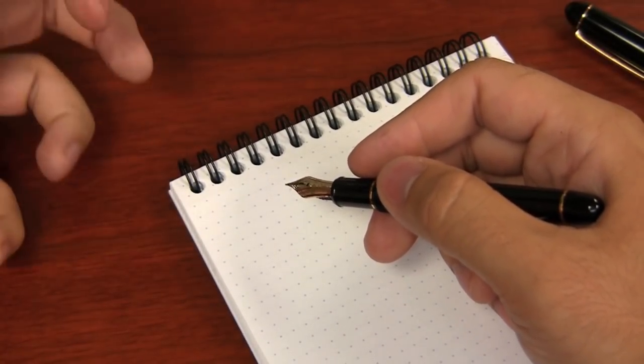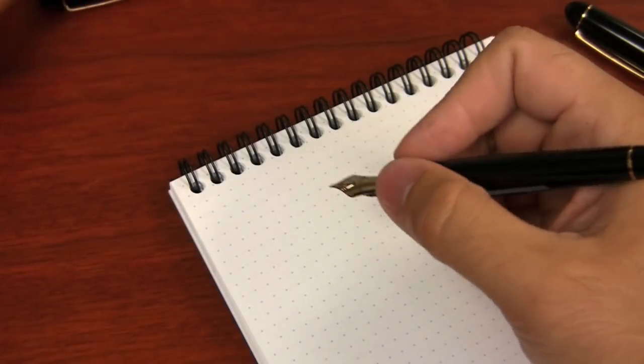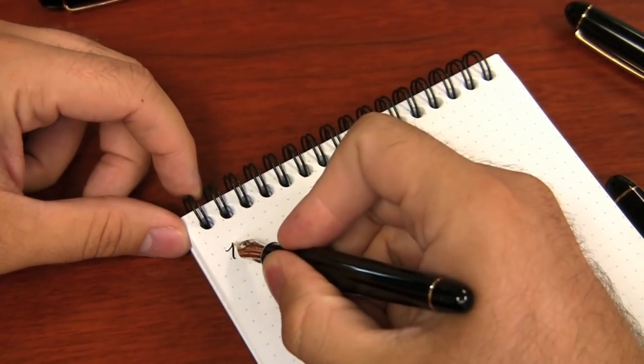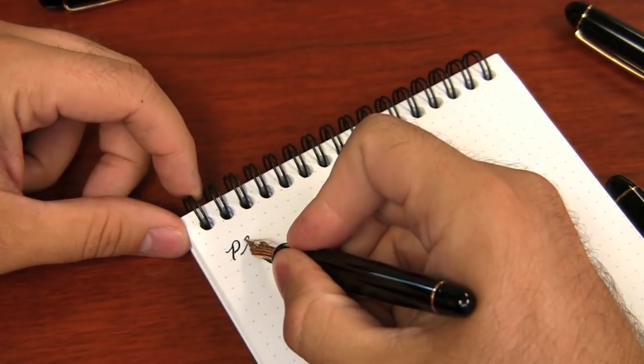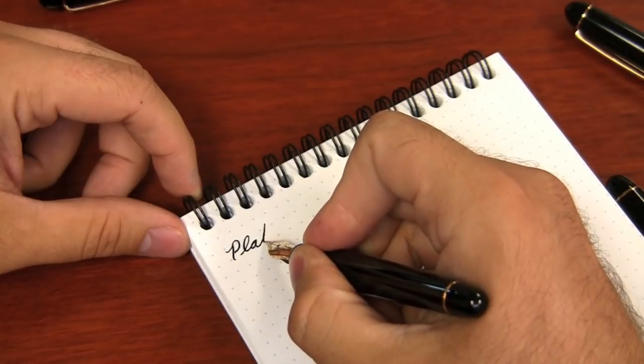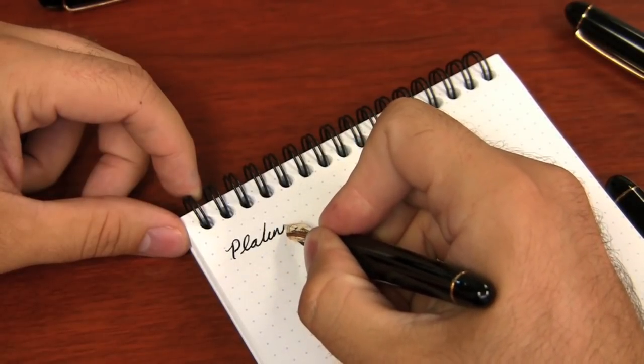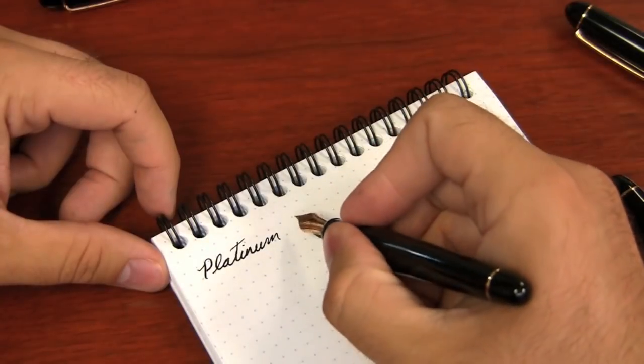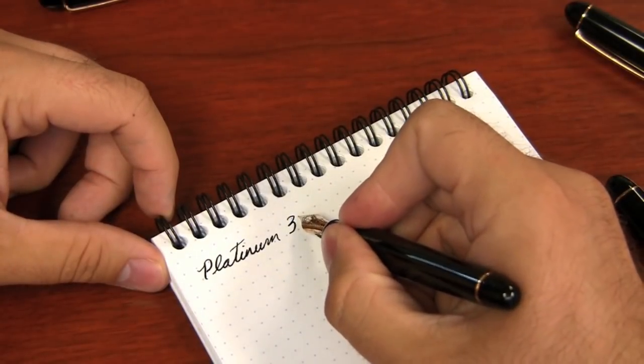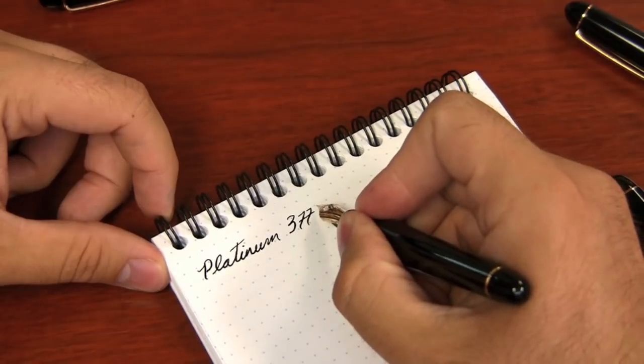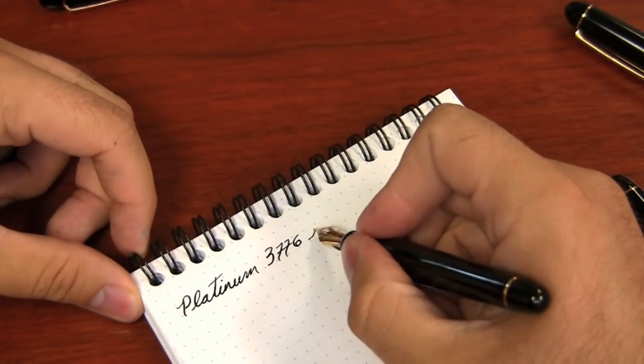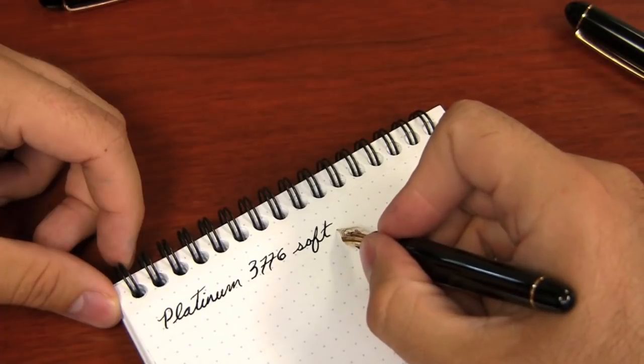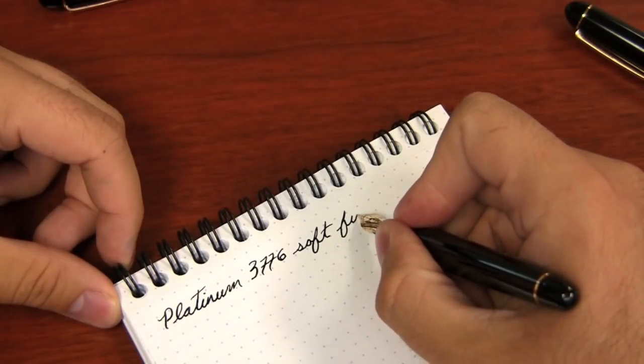It's not a true flexible nib in terms of getting multiple nib sizes wider, but it does get a little bit wider. I'm definitely no pro when it comes to using a soft nib, but you can see here you're getting some definite line variation. Now you do need to write a little bit slower when you're using this, and you only want to press on it when you're on the down stroke.